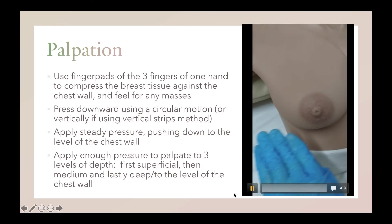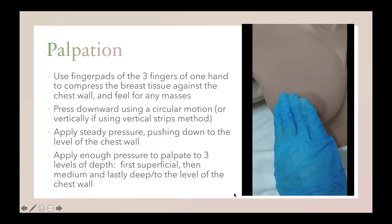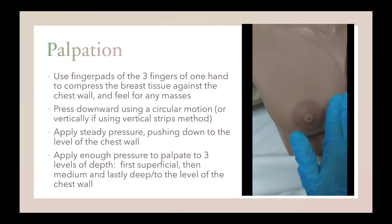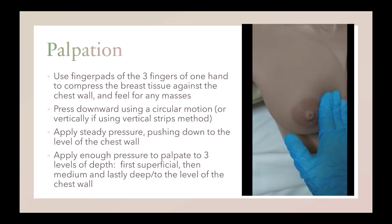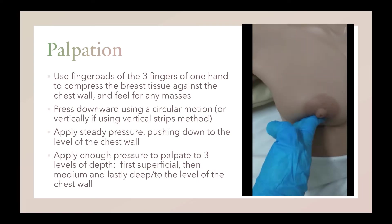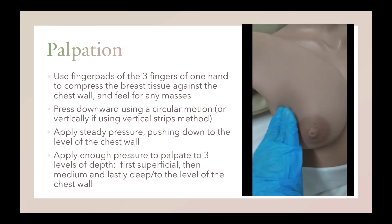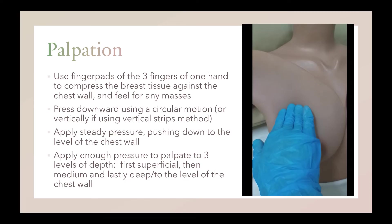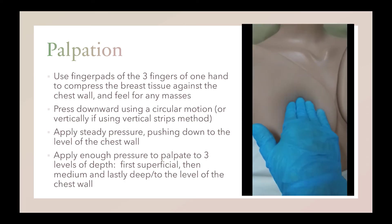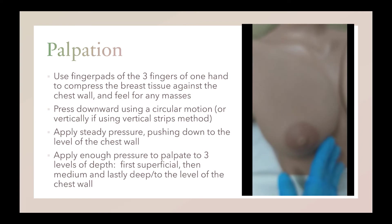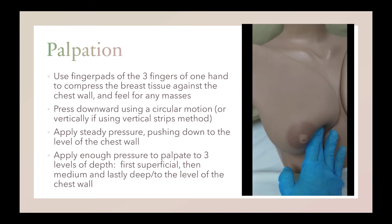When using the spiral method, use the finger pads of your three fingers of one hand to compress the breast tissue against the chest wall and feel for any masses. Press downward using a circular motion. Apply steady pressure pushing down to the level of the chest wall, applying enough pressure to palpate to the three levels of depth.